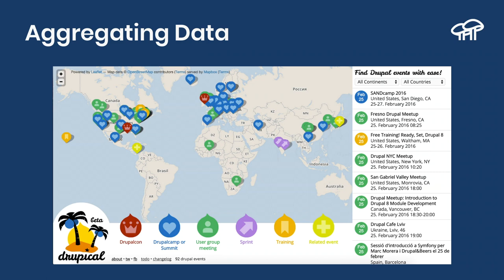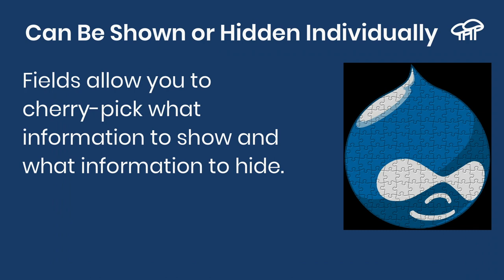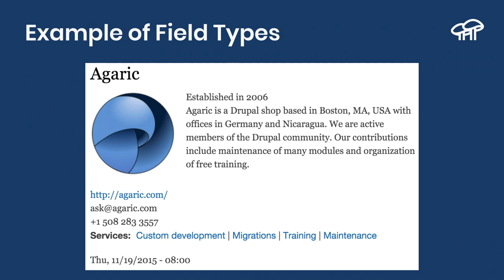You can also collect information in one format and present it in a different format — collect an address and display it on a map. The input format doesn't have to be the same as the output format. This is a real Drupal website called Drupical that collects information about Drupal events worldwide. They have a content type for events with fields for title, type of event (DrupalCamp, DrupalCon, meeting), date, and location. The map markers combine two different fields: the address to place the pin and the event type to color-code the pin. You can also decide per field whether to show it or hide it from end users.